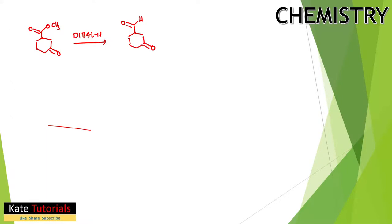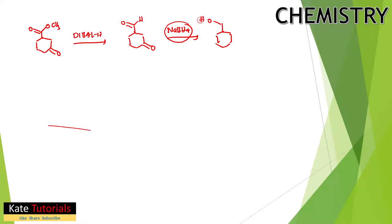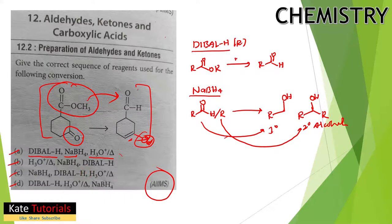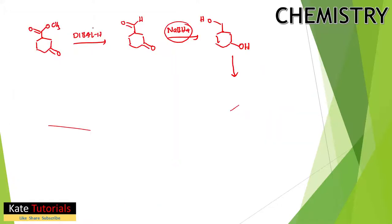In the second step, NaBH4 is added. NaBH4 reduces aldehydes and ketones to alcohols. The aldehyde is reduced to a primary alcohol (CH2OH) and the ketone is reduced to a secondary alcohol (C-OH).